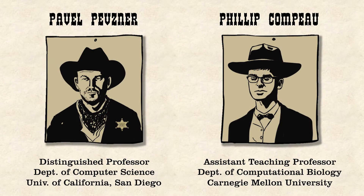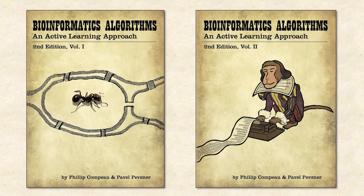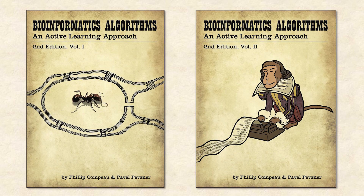He's dressed this way because he sometimes thinks that he's a sheriff of bioinformatics, a frontier discipline underpinning the digital revolution in biology and personalized medicine. Dr. Philip Compeau is an assistant professor of computer science at Carnegie Mellon University. To learn why he is dressed this way, you'll need to take this course or read the textbook Bioinformatics Algorithms: An Active Learning Approach, co-authored by the two speakers.